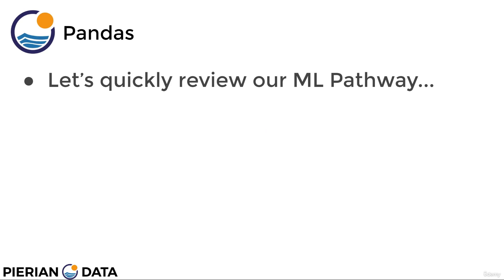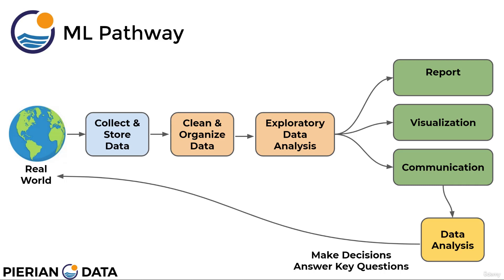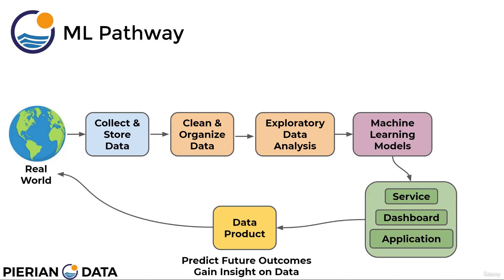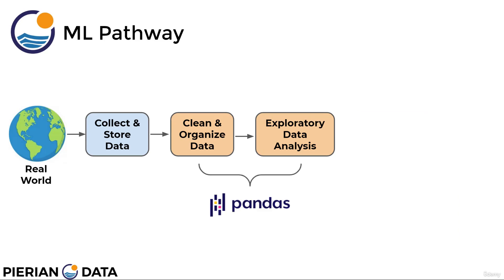Let's quickly review our machine learning pathway that we discussed at the very start of the course and see where we're actually falling along this pathway. Recall that if we're trying to perform some data analysis, we collect and store the data, clean and organize it, perform some EDA or exploratory data analysis, and then report, visualize, or communicate that data analysis. Or if we had to jump to a machine learning model to create a data product, then after the EDA, we create that machine learning model and then create a data product from it. So right now, we're essentially in the phase of cleaning and organizing our data and performing exploratory data analysis, and this is where the pandas library is going to come into play.